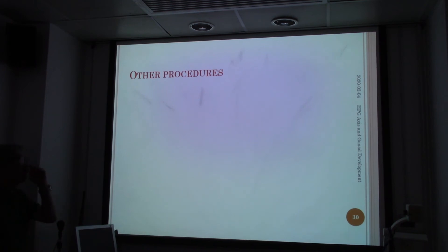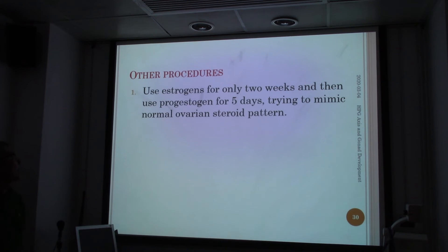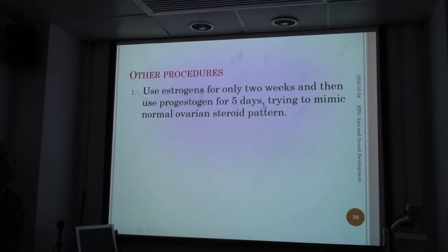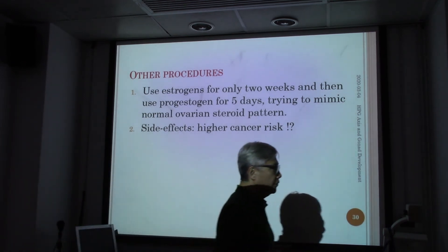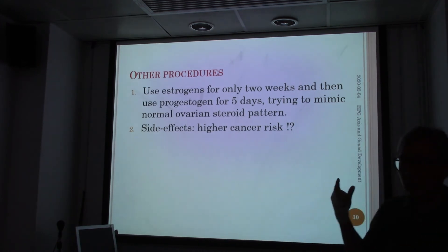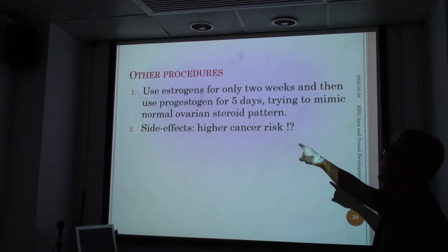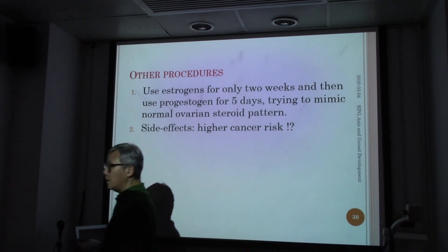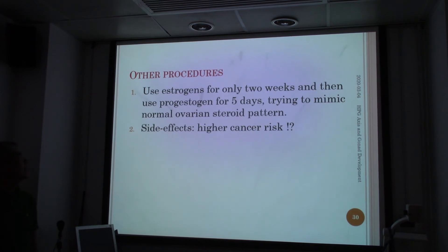Another contraceptive procedure uses estrogen for only two weeks and then progestogens for a few days, trying to mimic the normal ovarian steroid pattern. The key effect is from the extra estrogen added, which inhibits LH and FSH. Of course, there are safety issues with using these hormones, including concerns about ovarian cancer, breast cancer, and uterine cancer, compared with replacement therapies.